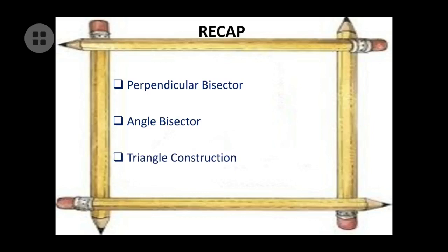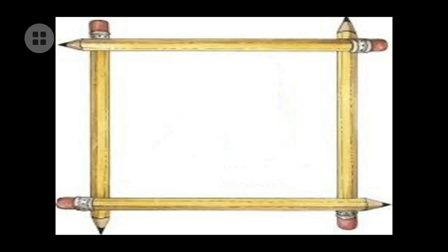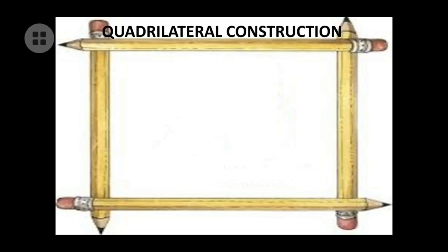Then we learned about triangle construction. We learned how to construct a triangle when three sides are given, when two sides and one angle are given, and when one side and two angles are given. For all these we have steps of construction. Today's topic is about quadrilateral construction.